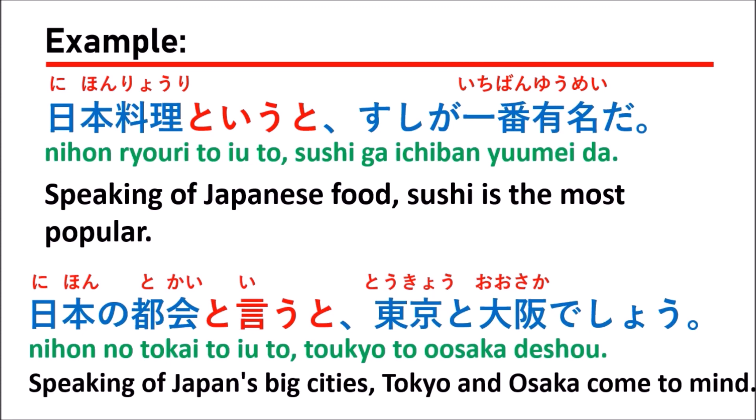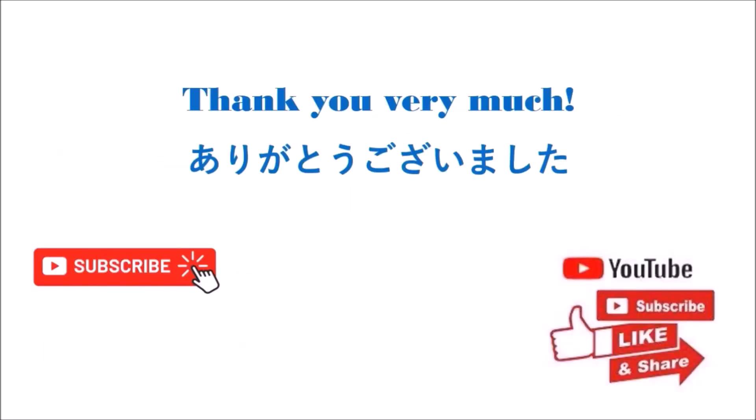So when you say a topic like a famous city in a country, you use と言うと to take the most famous example. Thank you very much for watching my video. Please subscribe to my channel if you haven't yet. I hope to see you for more Japanese learning next time. ありがとうございました (arigatou gozaimashita).